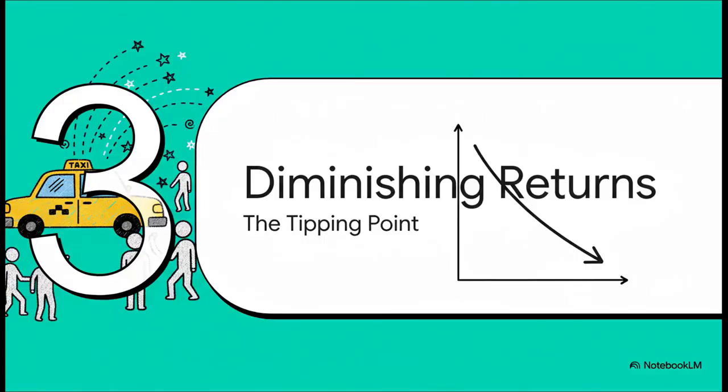Time for the main event: the law of diminishing returns, or what I like to call the tipping point. So we've got our fixed input, the taxi, and our variable input, the drivers. Now we're going to see what happens when you mix them together. This is where the magic and the trouble really begins.